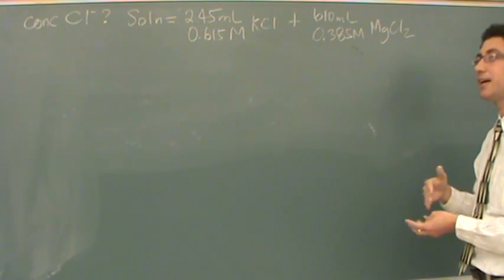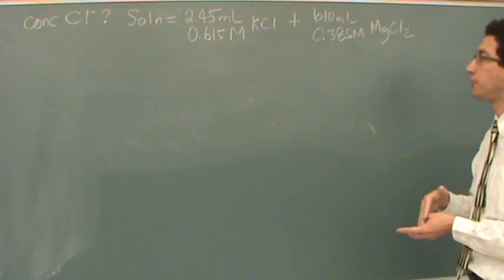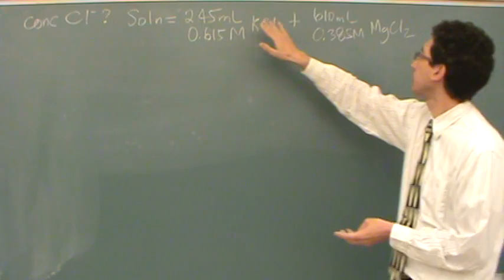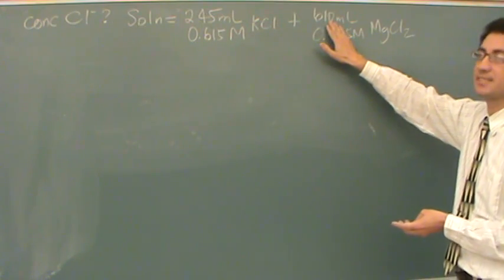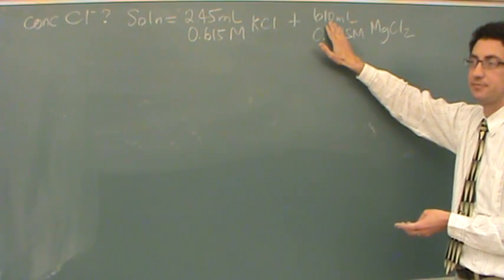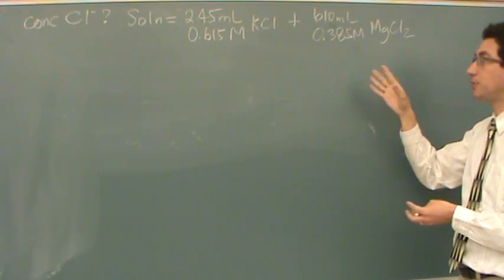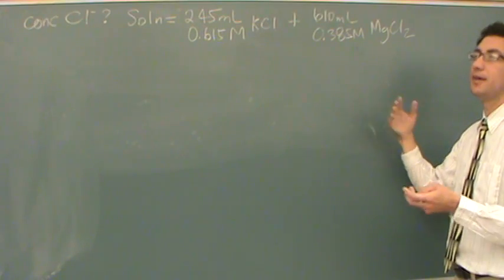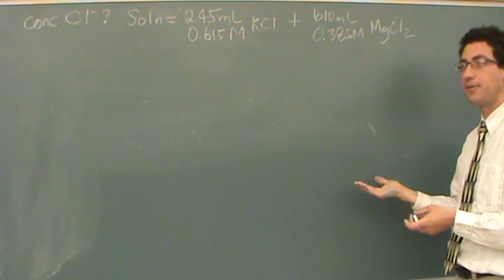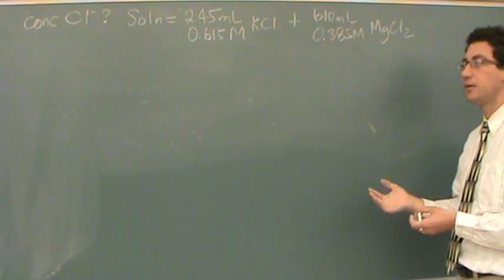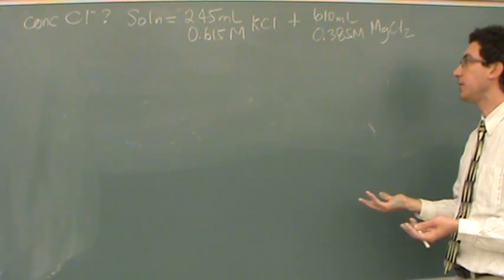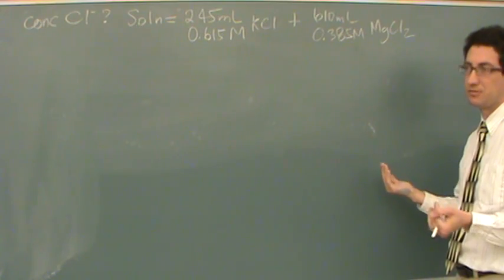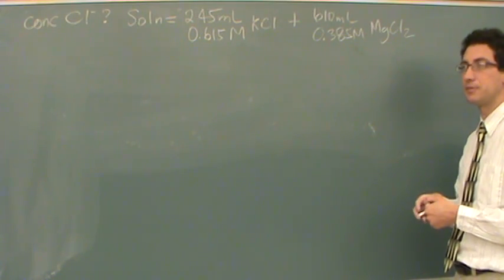And then we'll divide by the total volume, which is going to be 245 and 610 summed up. So we're going to add the moles, add the volumes, and divide the two. This is assuming that the volumes are additive, which in these kind of problems they would be.